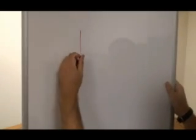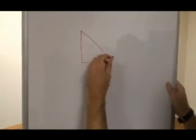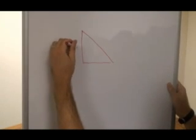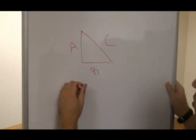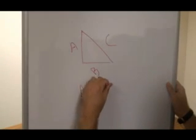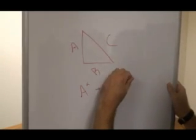The Pythagorean theorem says that for a right angle triangle with sides of length A and B, the hypotenuse can be figured out with this equation: A squared plus B squared equals C squared.